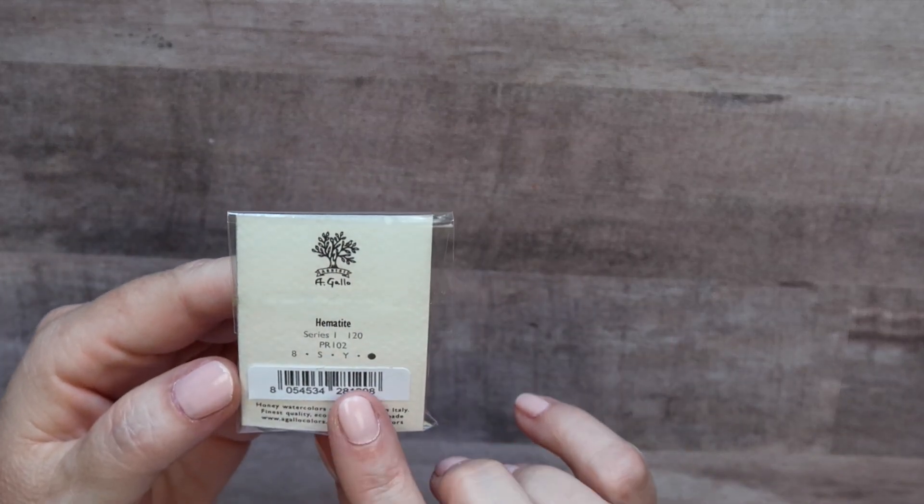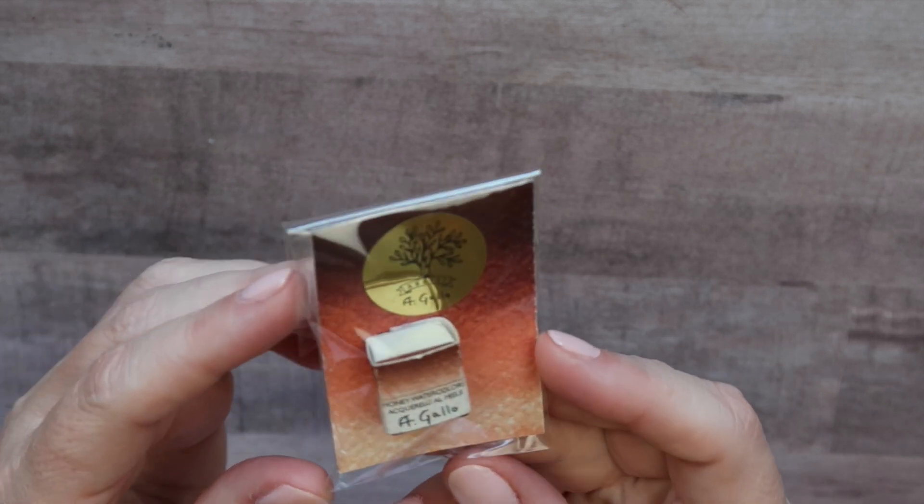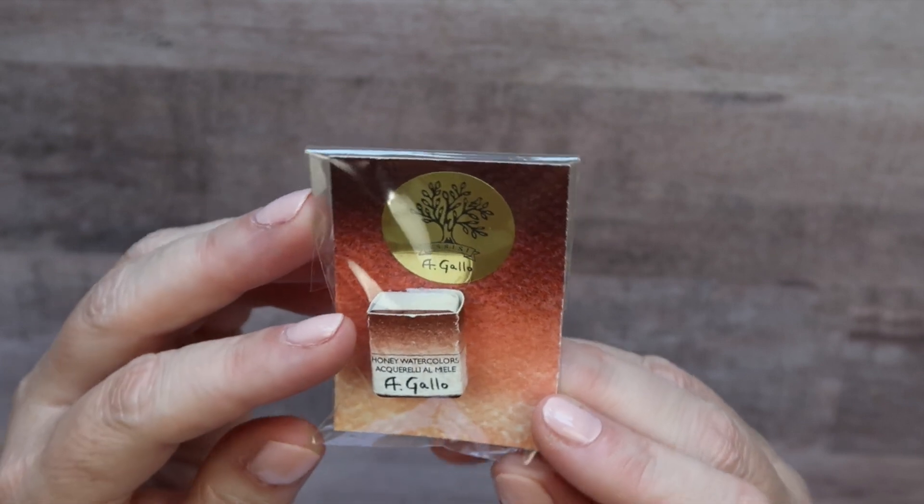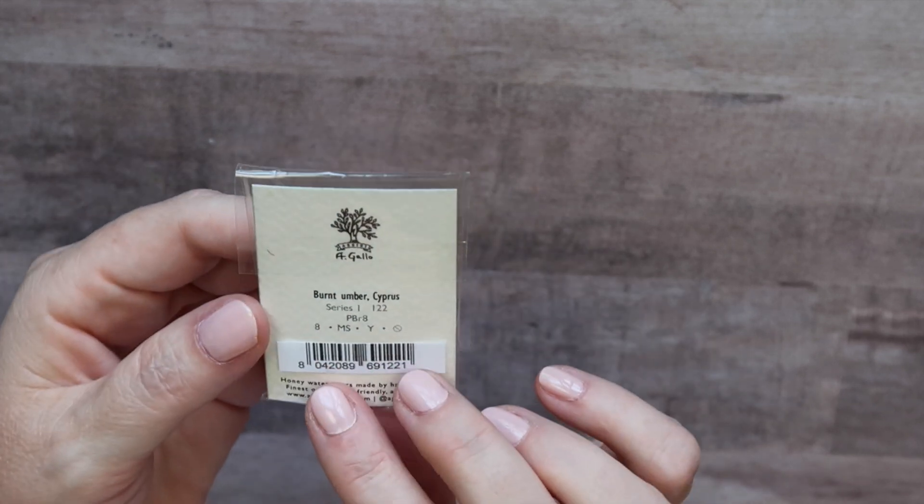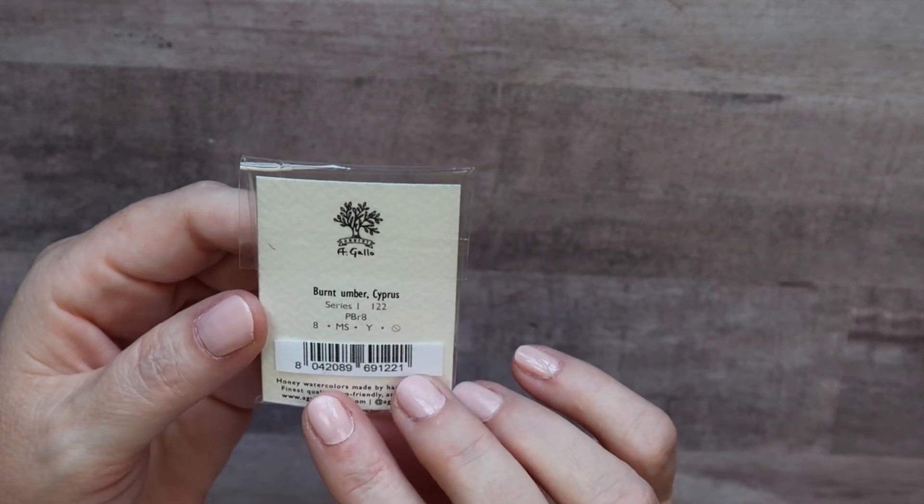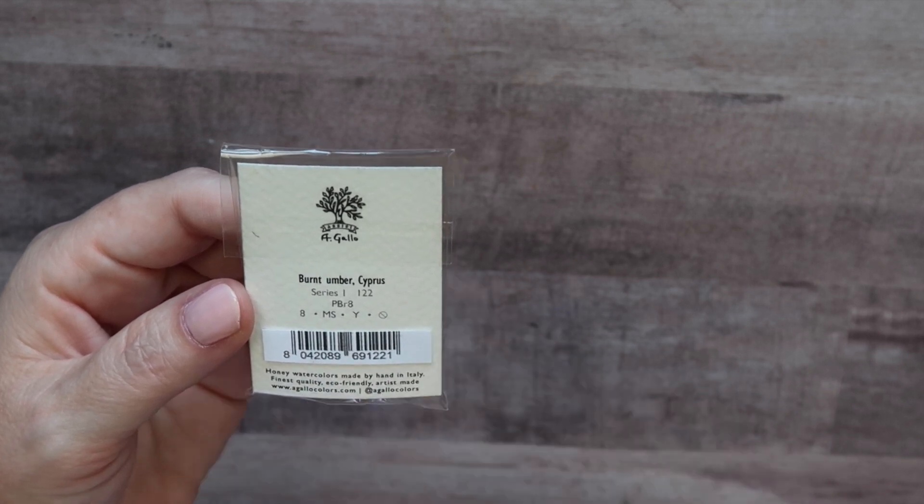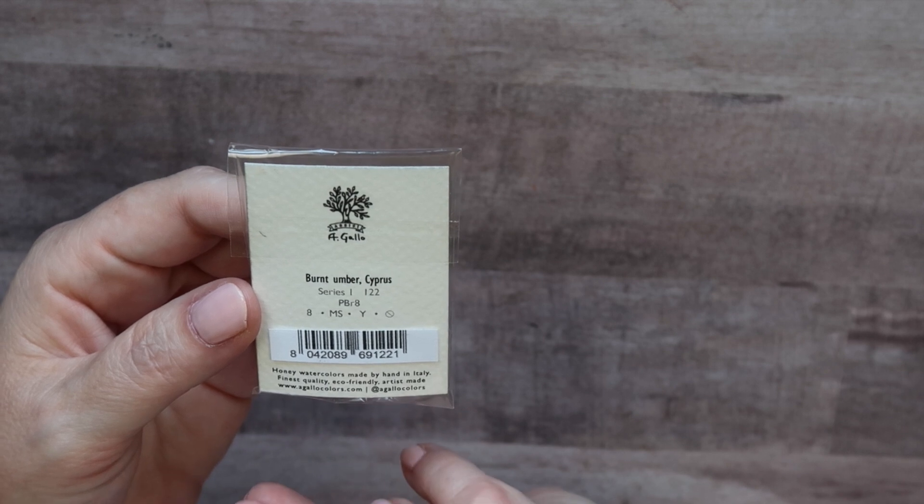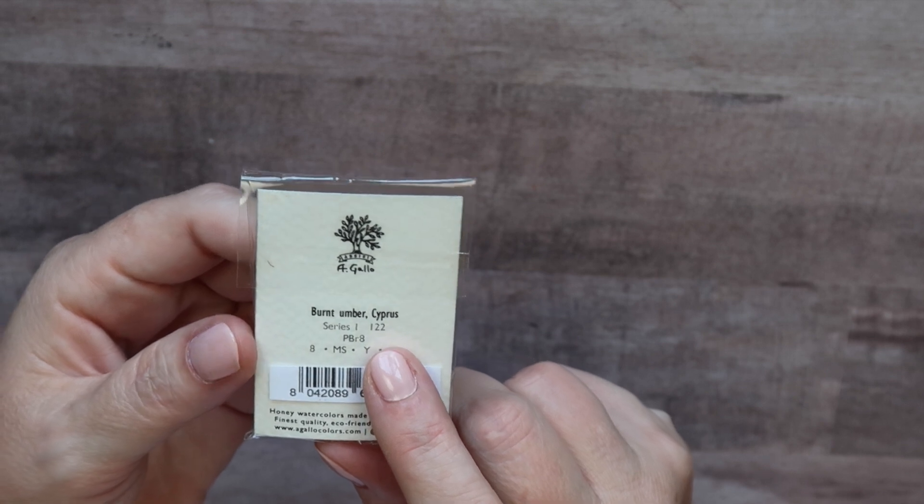And then next another really pretty. This is Hematite made from PR102 and look at that gorgeous brown. So pretty. And then lastly for the A. Gallo paints this is burnt umber Cyprus. This is made from PBR8. And I don't remember seeing that pigment before so that might be a unique pigment. But it's a really pretty neutral brown. It's a really pretty brown.